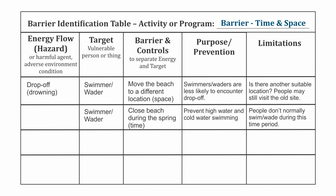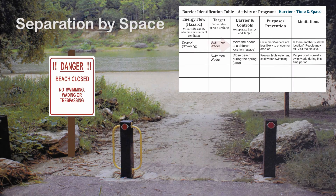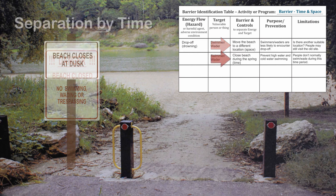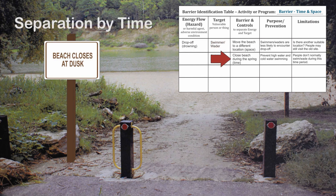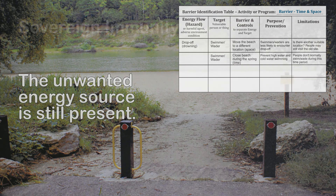Last, barriers can separate the energy source and target by time and space. Moving the beach area to a new location is an example of separation by space. Is there another suitable location? Closing the beach after 5 pm or during spring are examples of separation by time. Although these examples may be prudent, they have little impact on the drop-off itself.